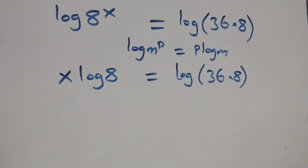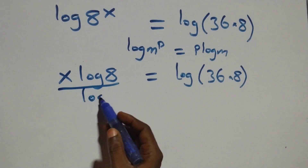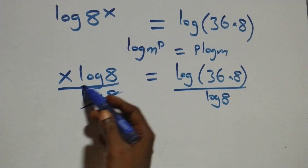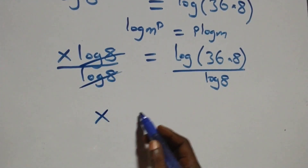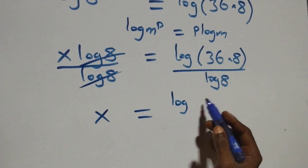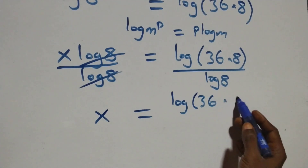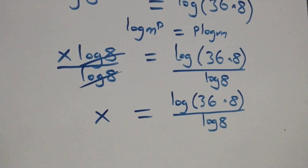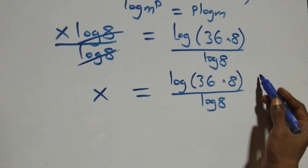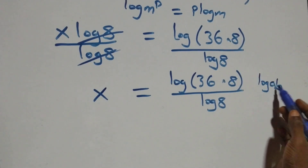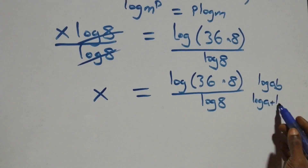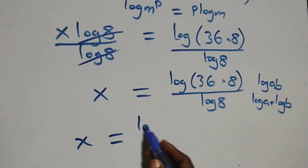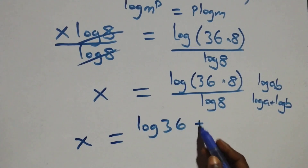The next step: we divide both sides by log 8. Log 8 cancels on the left, and we are left with x equals log(36 times 8) divided by log 8. From here, this follows the law of logarithms: log(a times b) is the same as log a plus log b. So what we have becomes x equals log 36 plus log 8, all over log 8.